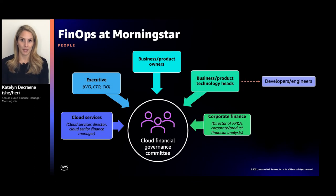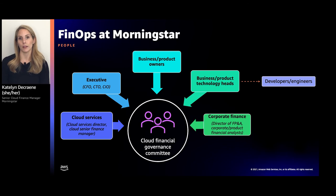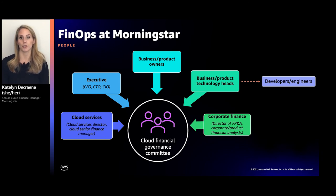So what does FinOps look like at Morningstar? Starting with the people aspect — one of the first things we did was establish a cloud financial governance committee made up of several key stakeholders from various functions and roles across the organization. We knew that in order for cloud governance and controls to be successful, we needed alignment and sponsorship from all these stakeholders. This committee is responsible for ensuring strategic alignment and financial success in the adoption of public cloud, and it meets monthly.